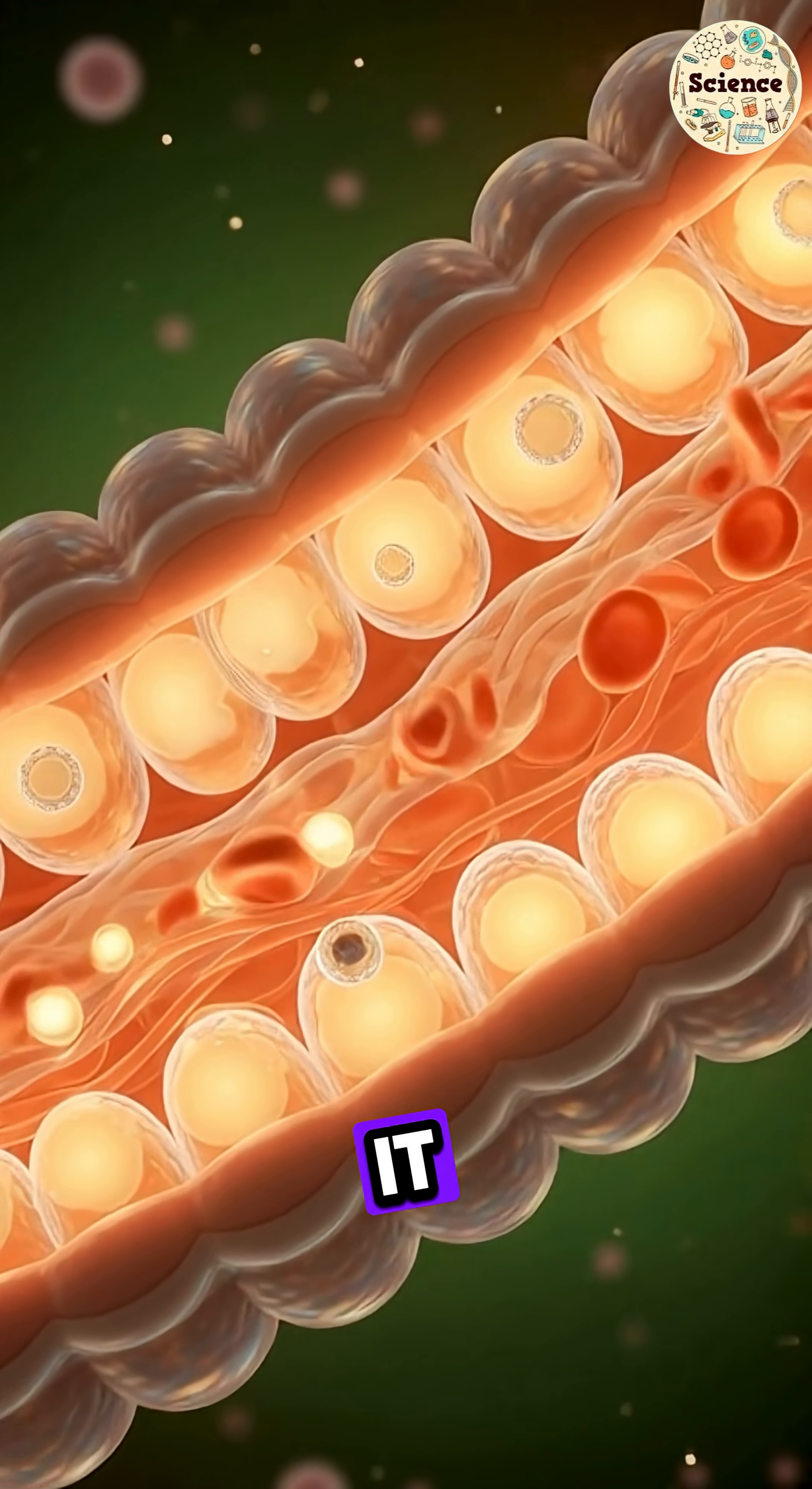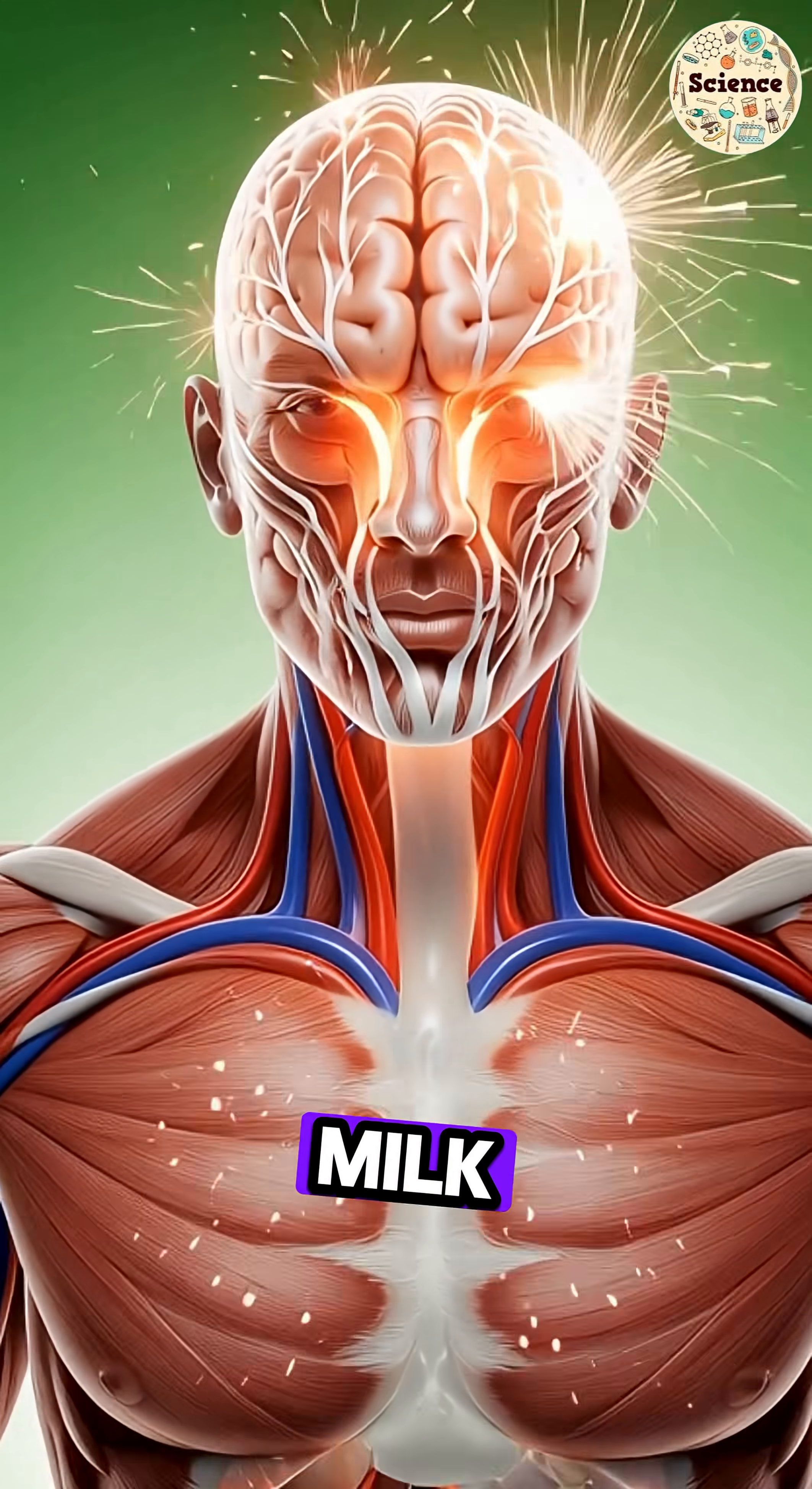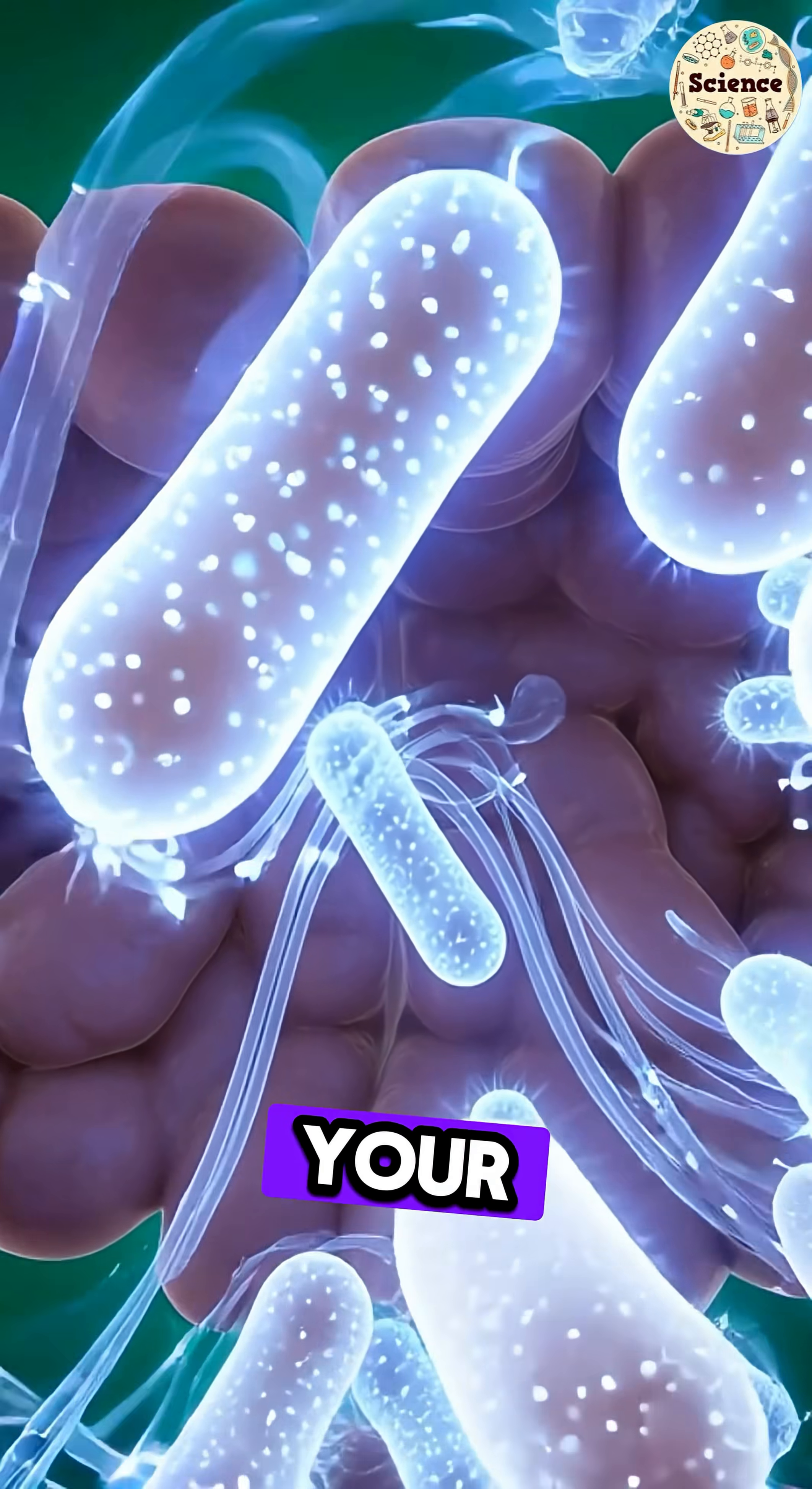From there, it moves into the intestines, where the real transformation begins. Inside the small intestine, tiny villi absorb the nutrients from milk: calcium, protein, vitamins, and natural sugars. These glowing nutrients enter the bloodstream and spread throughout your body.